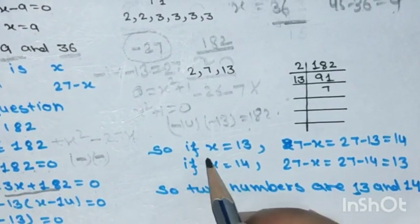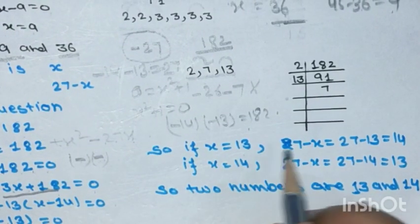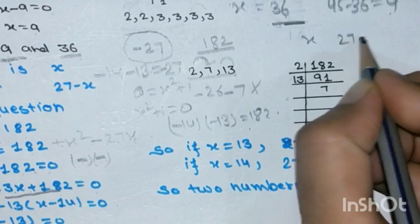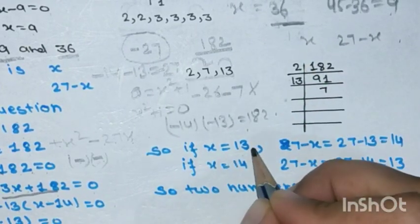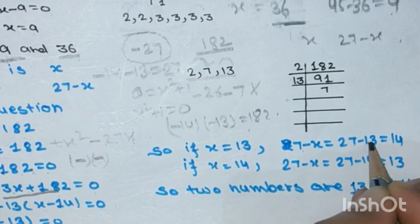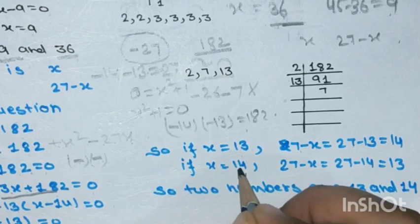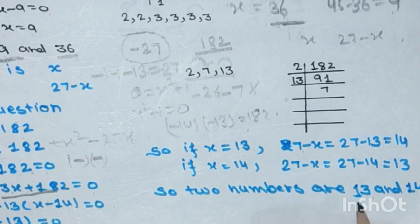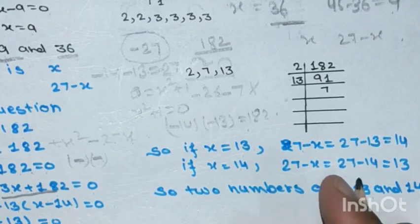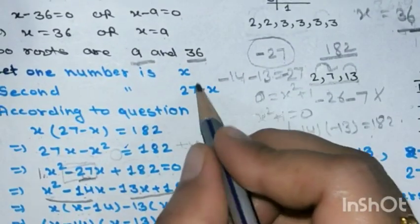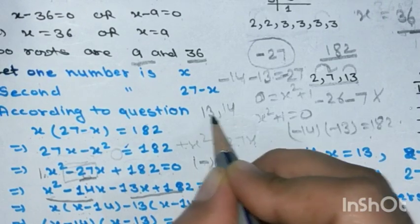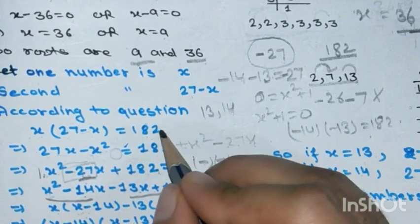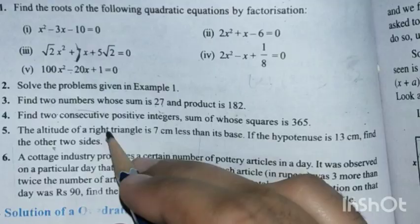If x = 13, second number = 27 - 13 = 14. If x = 14, second number = 27 - 14 = 13. So the two numbers are 13 and 14. The sum is 13 + 14 = 27 ✓ and the product is 13 × 14 = 182 ✓. You can verify by multiplying and adding to check.